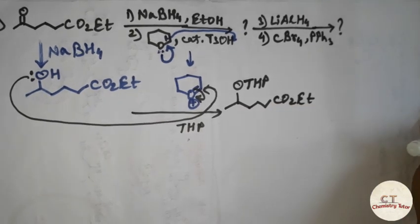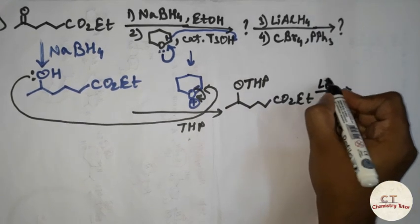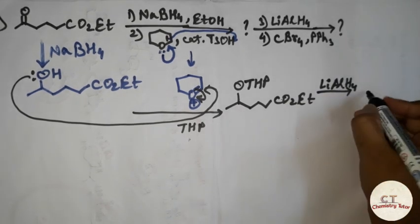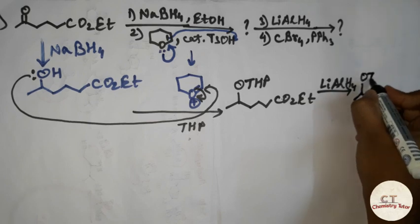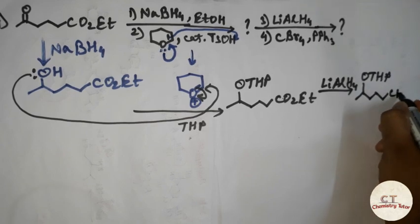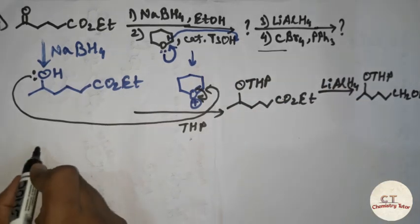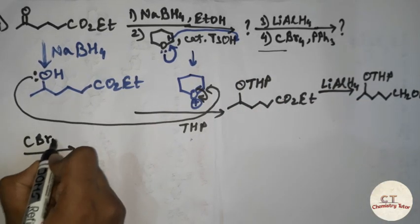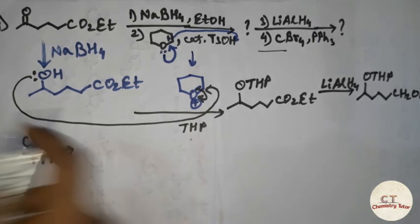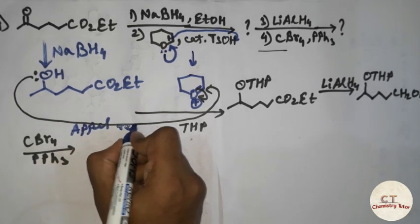In the next case, lithium aluminum hydride is given. What is the role of lithium aluminum hydride? It will reduce the ester group into alcohol, and the THP will remain as it is. It will reduce this to alcohol: CH2OH. In the fourth step, CBr4 in presence of PPh3 is given — I can write the product directly: it is a named reaction, the Appel reaction.